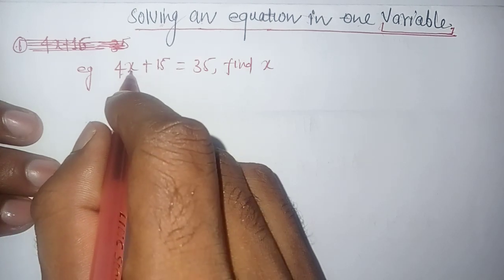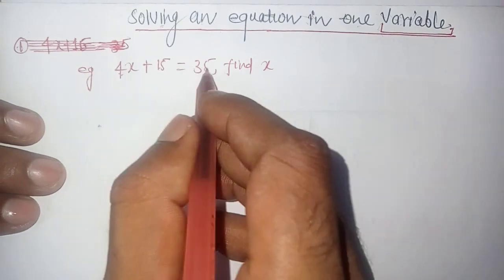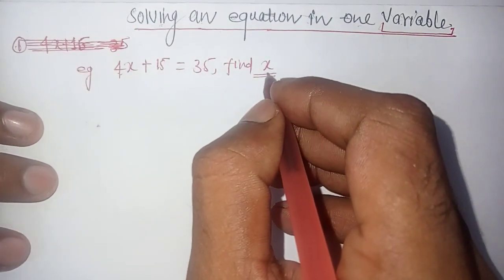For example, if you have 4x plus 15 equals 35, you need to find x. How do you get it?